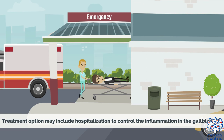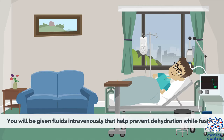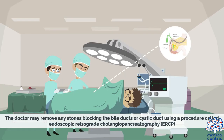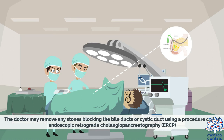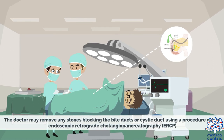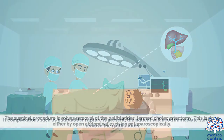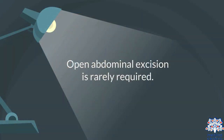Treatment options may include hospitalization to control the inflammation in the gallbladder, and sometimes surgery is needed. Fasting is used to take stress off the inflamed gallbladder; fluids are given intravenously to prevent dehydration. Antibiotics to fight infection and pain medications can also be given. The doctor may remove stones blocking the bile ducts or cystic duct using endoscopic retrograde cholangiopancreatography, or ERCP. If complications such as gallbladder rupture are present, the patient will need immediate surgery to remove the gallbladder — a procedure called cholecystectomy — performed either by open abdominal excision or laparoscopically.